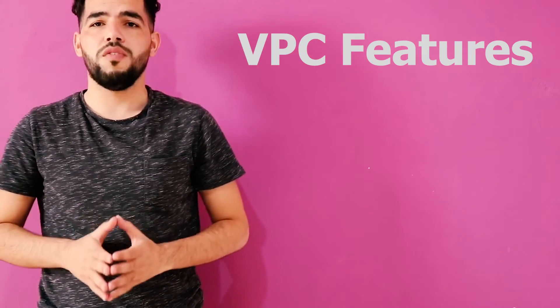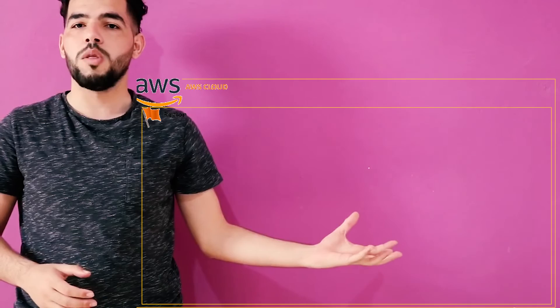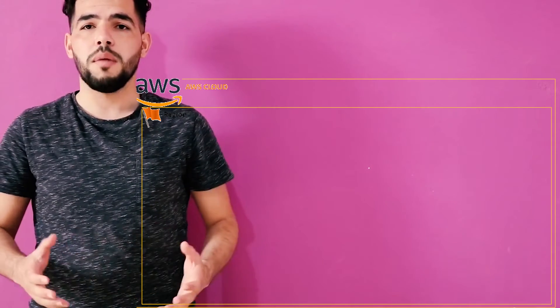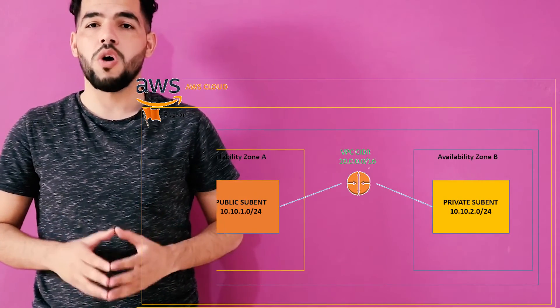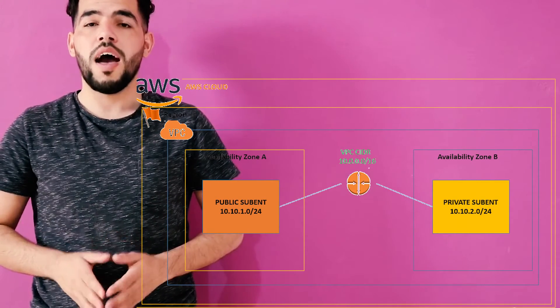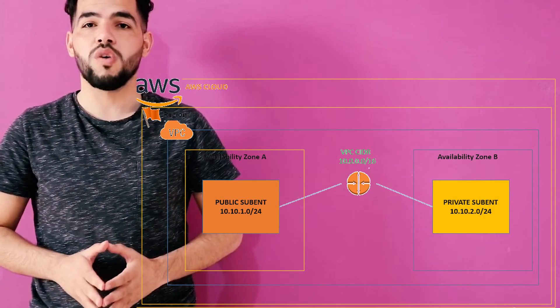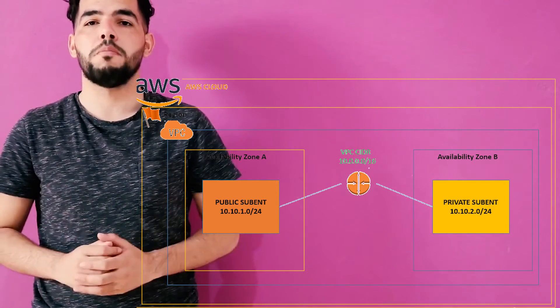Let's start to discuss about the VPC features. The first one: the VPC lives within regions, and you can also create one or more VPCs in your account. In the VPC region, as you can see, we have the AWS Cloud. In the AWS Cloud, we have the region, and this region contains one or more availability zones. The VPC will cover these availability zones, and in the availability zones we have two types of subnet: the private subnet and the public subnet.